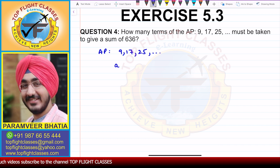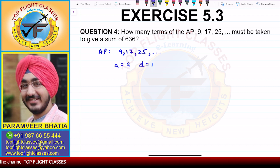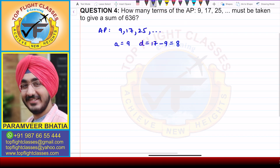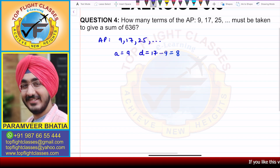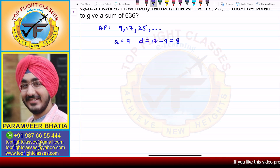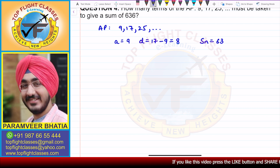In this case, A is 9. To find D, we take the second term minus the first term: 17 minus 9 gives D equal to 8. So A is 9, D is equal to 8, and the sum SN is given as 636.